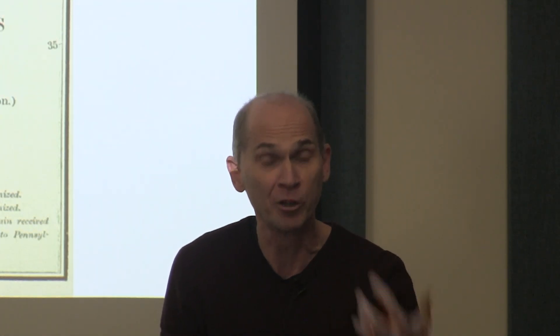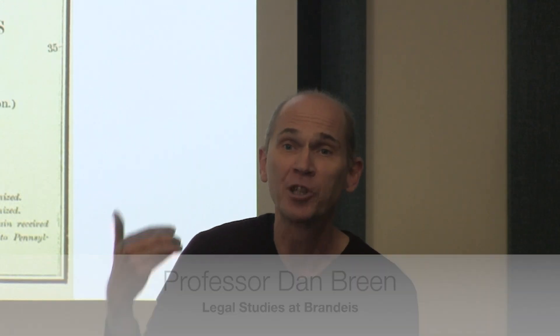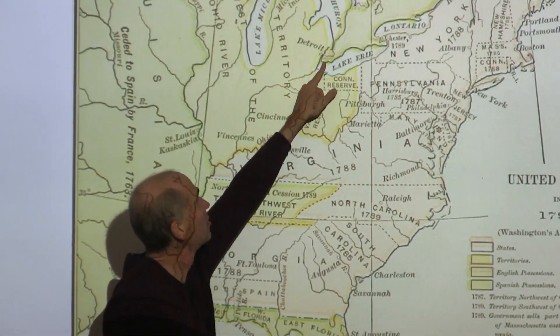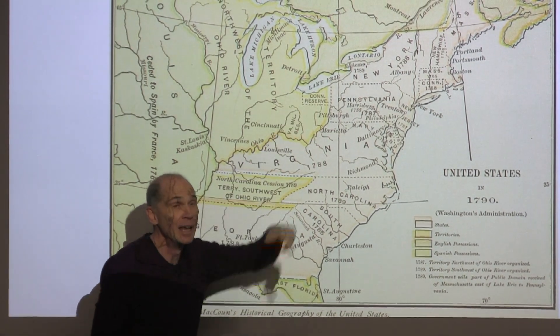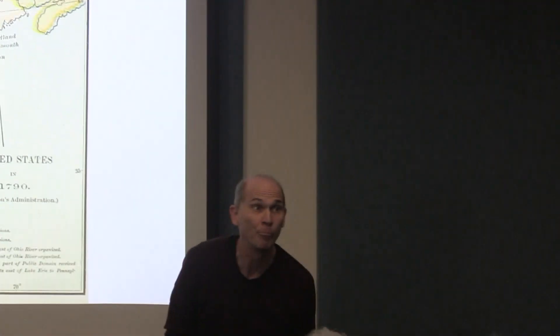By the 1780s, the Iroquois of upstate New York and parts of Canada were rapidly dwindling in power, leaving the Indians of the Ohio country in free and uninterrupted control of their lands. They also had plentiful weapons supplied by the British in Canada — and not just from Canada but also from British garrisons still occupying US territory despite the Treaty of Paris in 1783. There were still British garrisons in Detroit and at Fort Miami at the mouth of the Maumee River, where Toledo is now. Armed with British support and weapons, the Indian Confederacy of the Ohio country would be a formidable enemy.